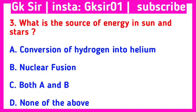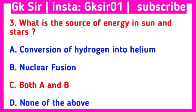Question number 3. What is the source of energy in the sun and stars? Option A: conversion of hydrogen into helium, Option B: nuclear fusion, Option C: both A and B, Option D: none of the above. The correct answer is Option C: both A and B — conversion of hydrogen into helium and nuclear fusion.